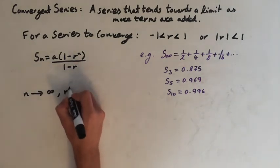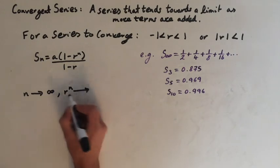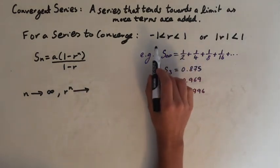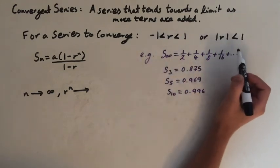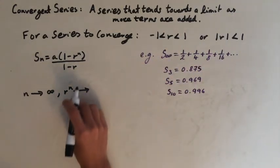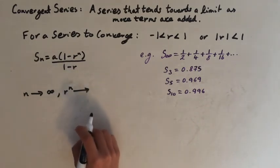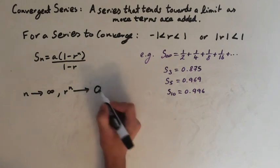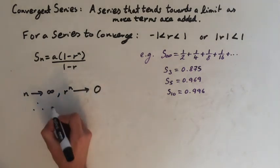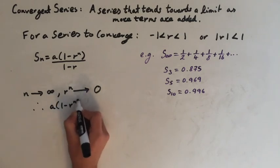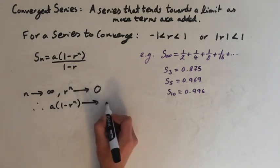So let's look at the value of r to the n. The value of r is less than 1 or bigger than minus 1, so the modulus is less than 1. So as we increase the power this value here r to the n is just going to get smaller and smaller. So this is going to converge to 0.